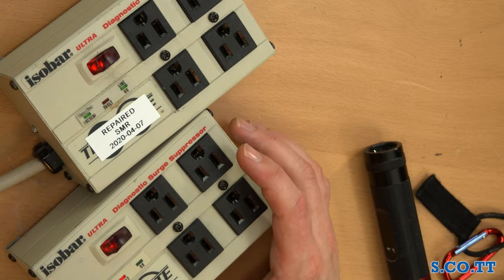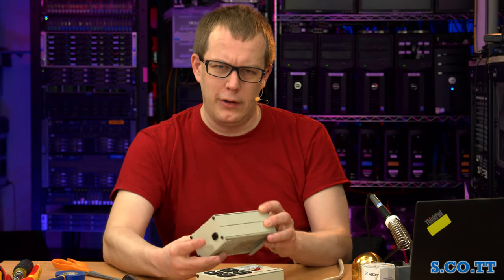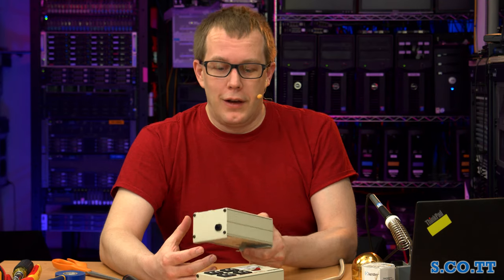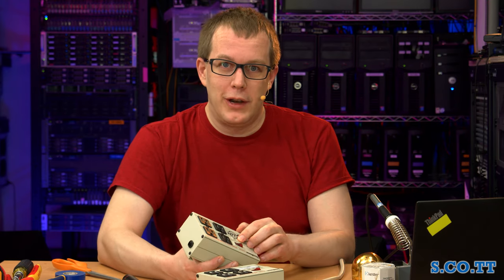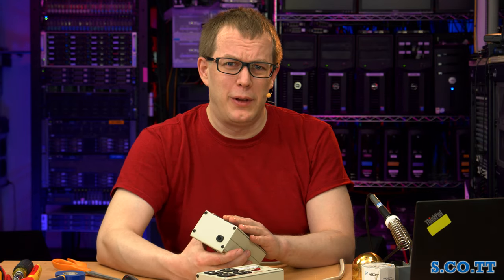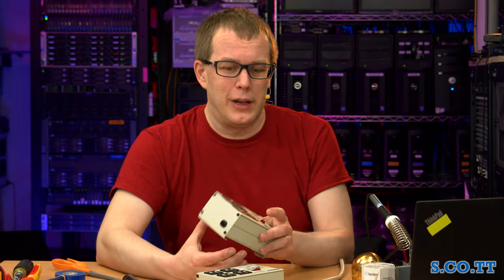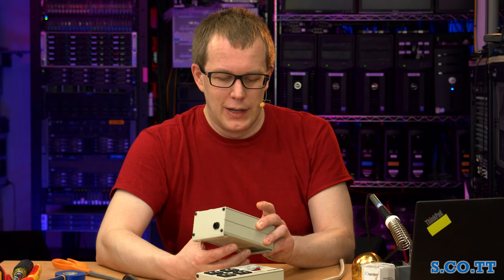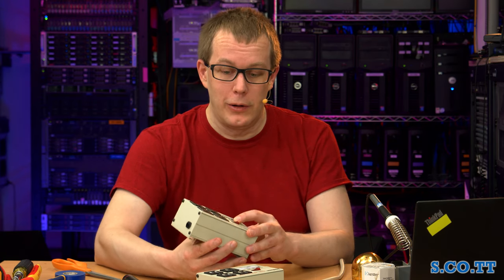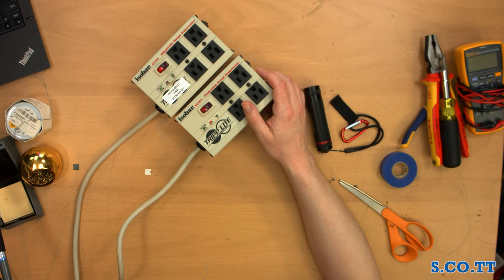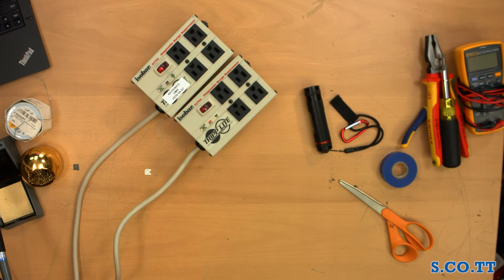Now, with these, unlike most power strips, or power bars, or ISO bars, whatever the fuck these are called, anyway, unlike most of them, when these fail, when the protection fails, they stop working completely. Like, you get no output. Or at least in the manner that this one failed. I don't know if any time they fail for any reason that happens, but yeah, it's not just that the LED comes on, they stop conducting power at all, these receptacles. So, enough talk. Let me unplug these and start tearing into them.